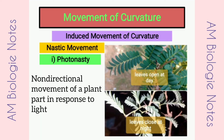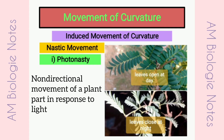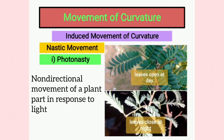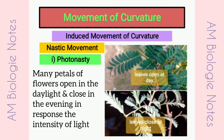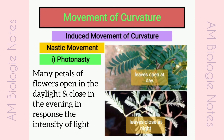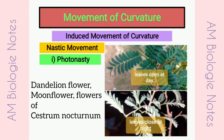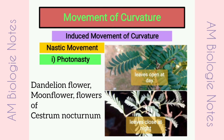Photonasty: It is the non-directional movement of a plant part, usually in the petals of flowers, in response to light. Many petals of flowers open in daylight and close in the evening in response to the intensity of light. Examples are dandelion flower, moon flower, flower of Cestrum nocturnum, etc.